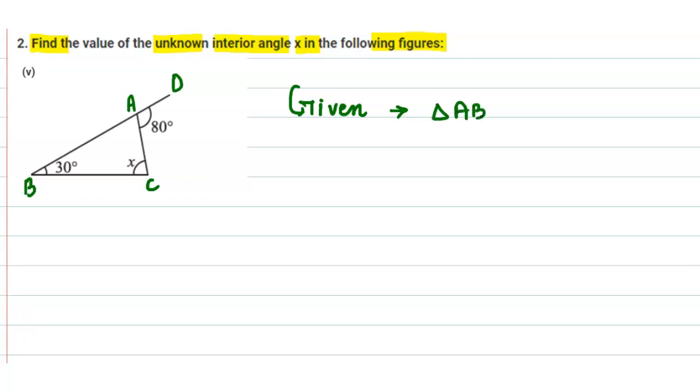In this triangle we have angle ABC which is given as 30 degrees, and angle ACB equals x.